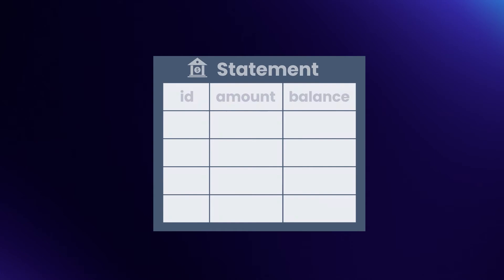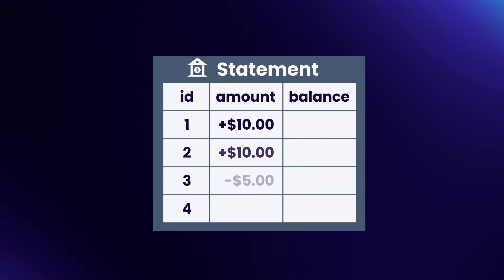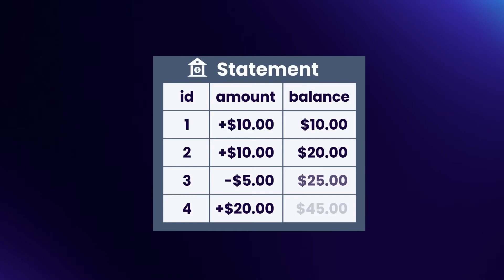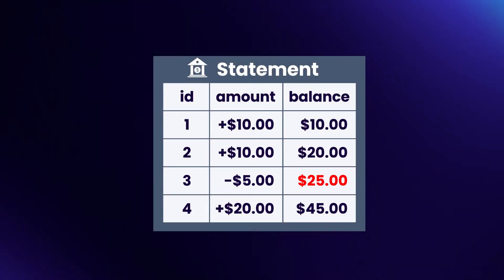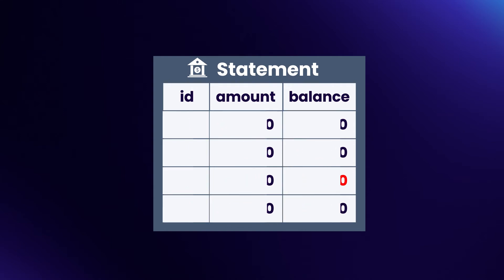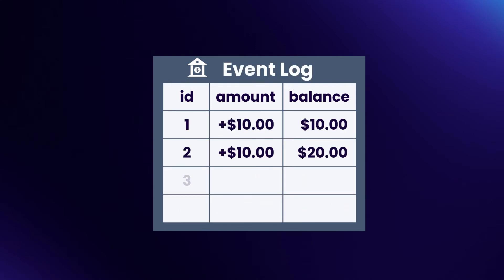If you do find yourself in a disaster scenario, the event log may be able to help you recover. Imagine if someone introduced a bug that has invalidated some of your state. What if we incorrectly calculated a bank account balance? Thankfully, banks keep their own event log in the form of the transaction history. Even if the current balance was calculated incorrectly, you can always go back to the transaction log and recalculate the correct balance.